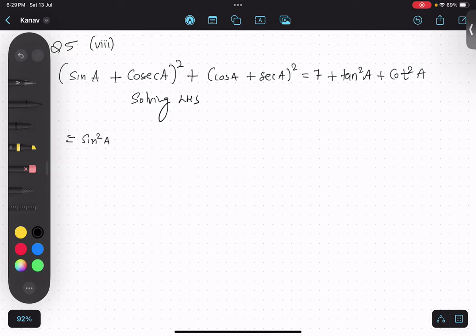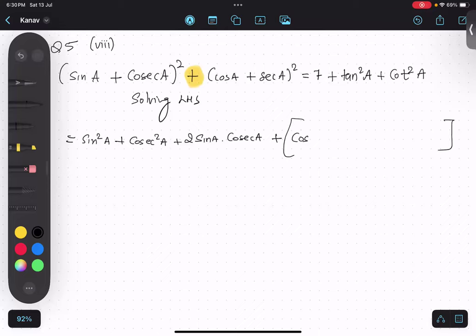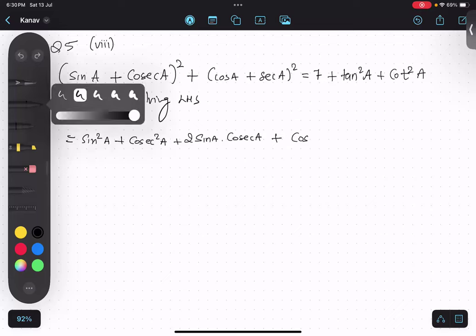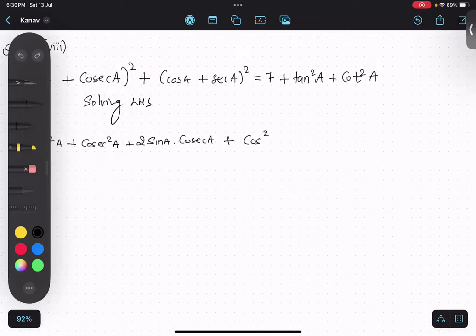So identity: sin²A + cosec²A + 2sinA multiplied by cosecA. This is the first bracket. Similarly for the second bracket. See, if this was minus now, then I would have put a bigger bracket so that it changes the sign. Right now it's a plus, so I'm not bothered. Is that thing clear?